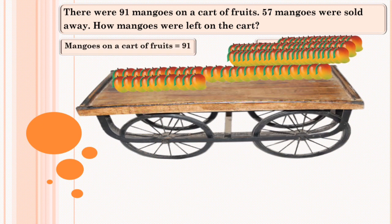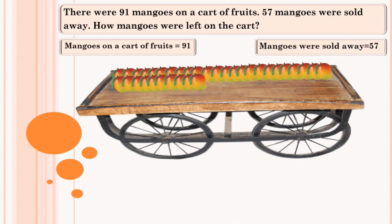Mangoes sold away equals 57. When mangoes were sold away, we know the number of mangoes on the cart becomes less. This shows there is subtraction. Now, subtract 57 from 91.